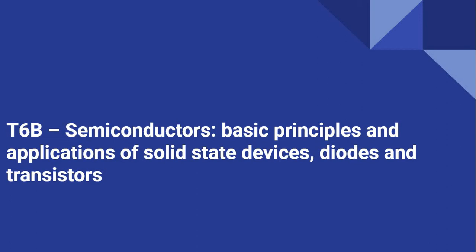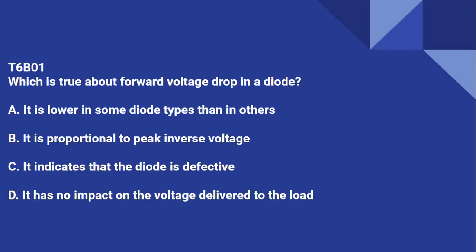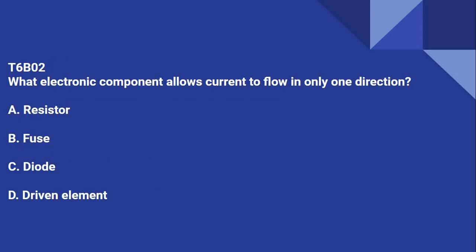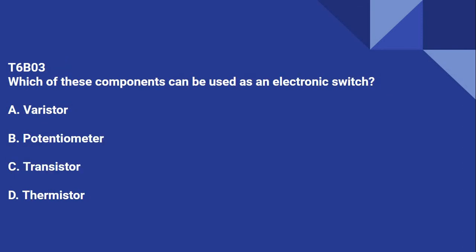T6B covers semiconductors, basic principles and applications of solid state devices, diodes, and transistors. T6B01: Which is true about forward voltage drop in a diode? It is lower in some diode types than in others. T6B02: What electronic component allows current to flow in only one direction? That is a diode. T6B03: Which of these components can be used as an electronic switch? A transistor.